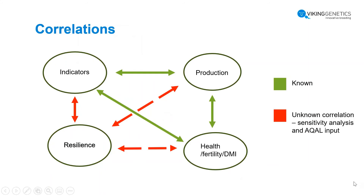When simulating ADAM you need good inputs, and we need to understand the correlations between different traits, especially the genetic correlations. I illustrated that here with some arrows. Green arrows are correlations we know from, for example, the Poppe study — so we know the correlation between the indicators toward production and also toward health, fertility, and dry matter intake. But we don't really know those correlations toward the true or actual resilience, so we need to do some sensitivity analysis. We are also collaborating with work package CIS-6, which has a program called AQUAL.